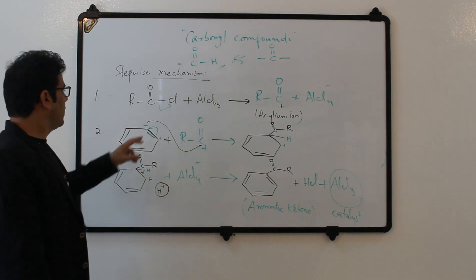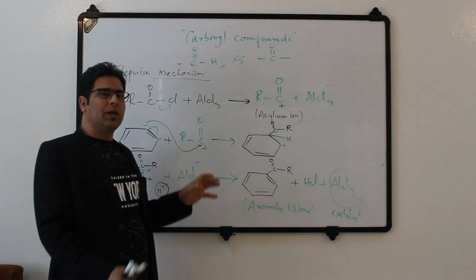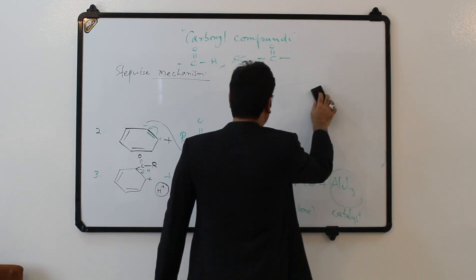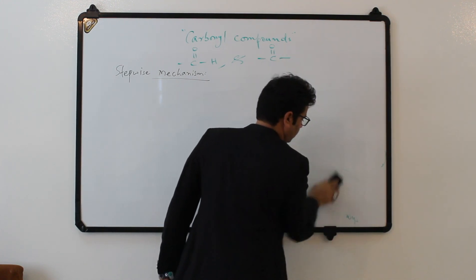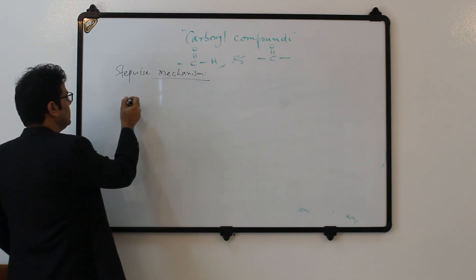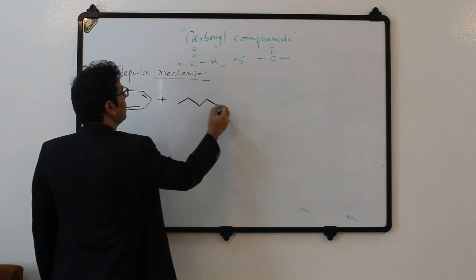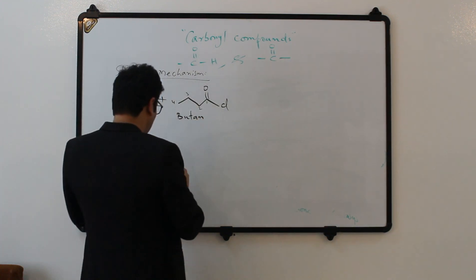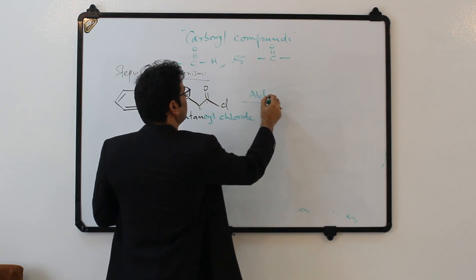Now we can change the acid chloride to get different aromatic ketones. For example, if we use benzene plus butanoyl chloride — butane where the -yl is replaced by acid chloride — in the presence of AlCl3 catalyst, what will be the result? Let me show you this example.